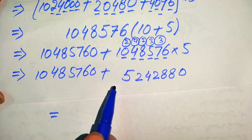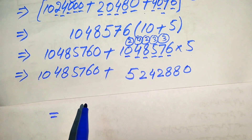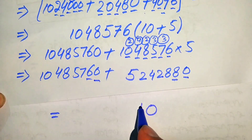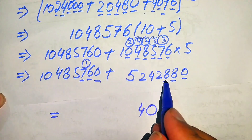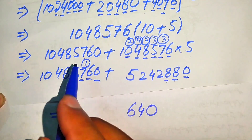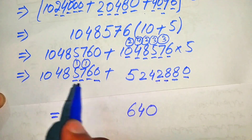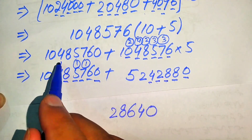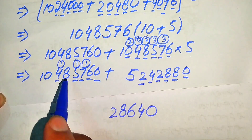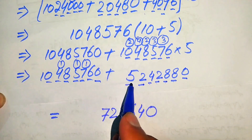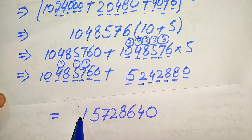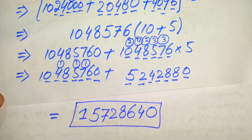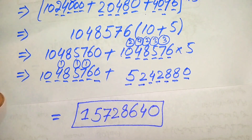In the final step, we sum 10485760 and 5242880: 0 plus 0 is 0; 6 plus 8 is 14 (write 4, carry 1); 7 plus 8 is 15 plus 1 is 16 (write 6, carry 1); 5 plus 2 is 7 plus 1 is 8; 8 plus 4 is 12 (write 2, carry 1); 4 plus 2 is 6 plus 1 is 7; 0 plus 5 is 5; and 1 remains. This gives our final answer. Thank you so much for watching this video — please subscribe to my channel for more exciting videos.